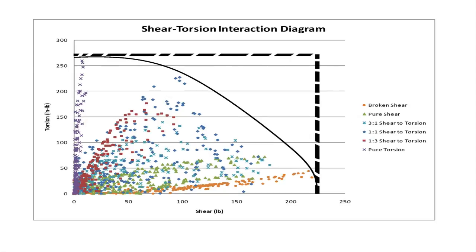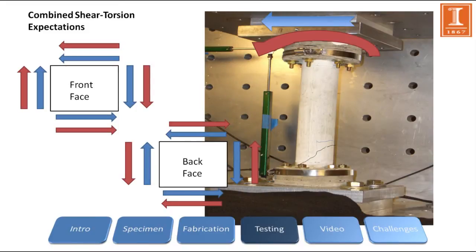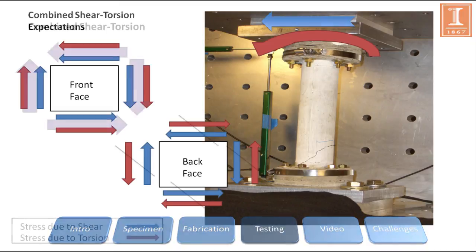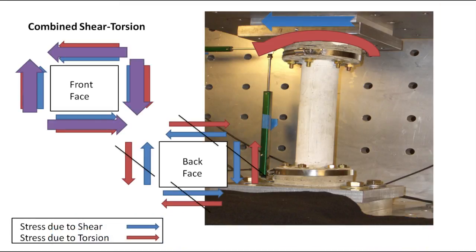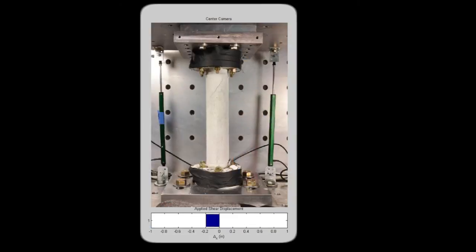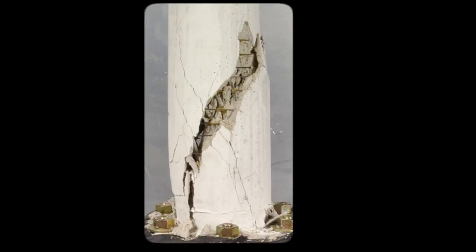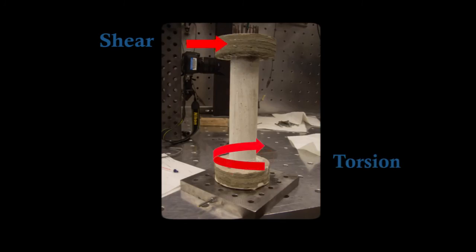It is evident that interaction effects will reduce the ultimate strength that can be achieved by the specimen. This agrees with the engineering principles previously discussed, in which the shear stress components are additive on one surface of the specimen, resulting in earlier shear failure. Therefore, a set of small-scale experiments has been used to illustrate the basic engineering principles of shear and torsion.